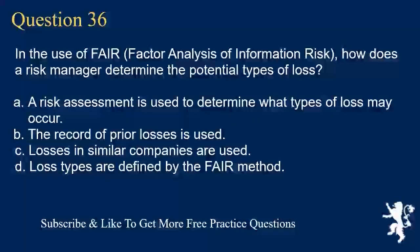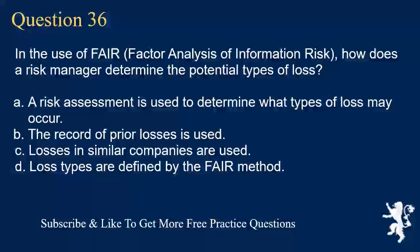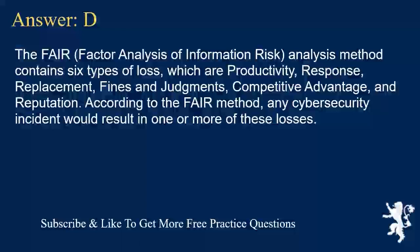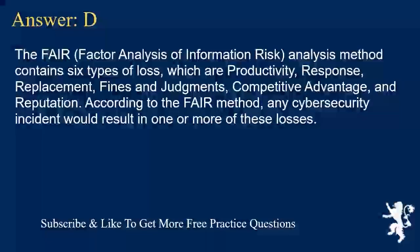Question 36. When using FAIR (Factor Analysis of Information Risk), how does a risk manager determine the potential types of loss? A. A risk assessment is used to determine what types of loss may occur. B. A record of prior losses is used. C. Losses in similar companies are used. D. Loss types are defined by the FAIR method. Answer D. The FAIR (Factor Analysis of Information Risk) analysis method contains six types of loss, which are productivity, response, replacement, fines and judgments, competitive advantage, and reputation. According to the FAIR method, any cybersecurity incident would result in one or more of these losses.